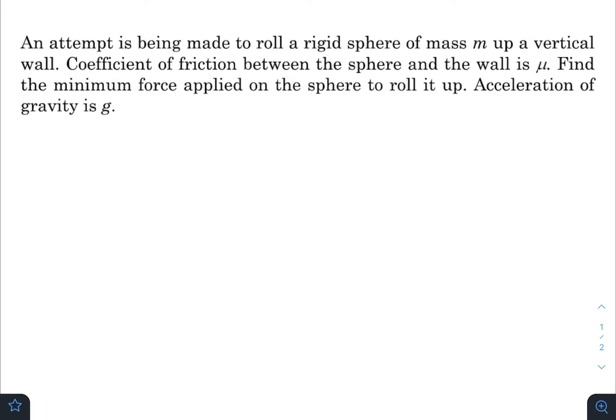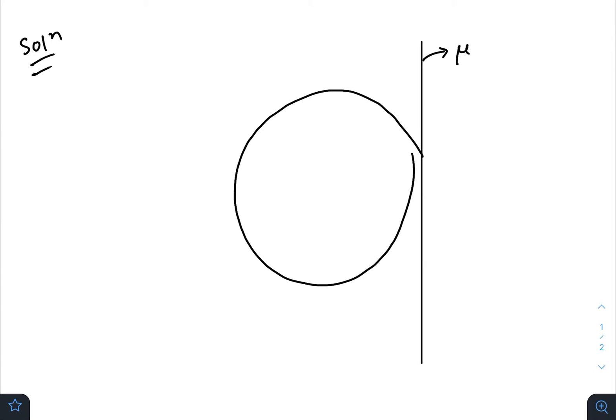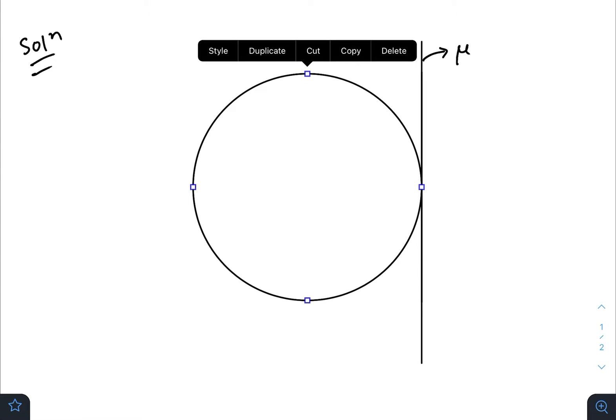Okay, so let's get started. We have a vertical plane or vertical wall—a rough vertical wall having coefficient of friction equal to μ. And we have a rigid solid sphere. Let the radius be r, actually it was not required.